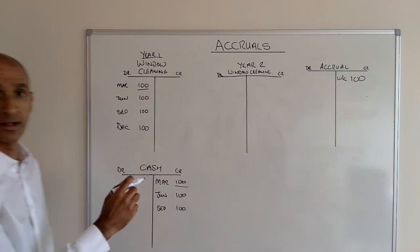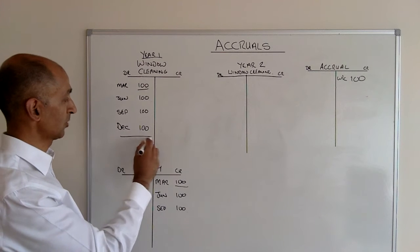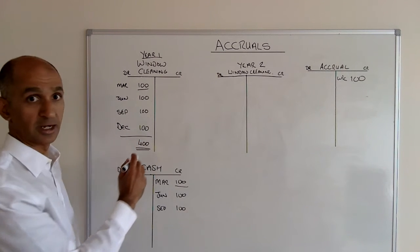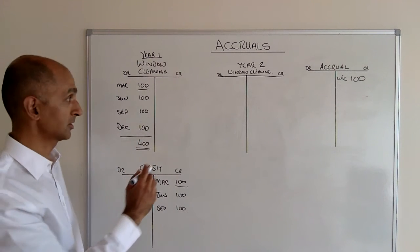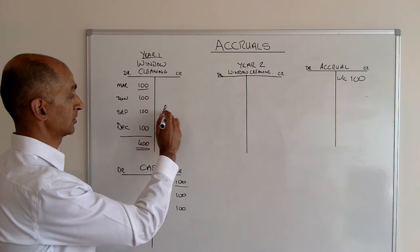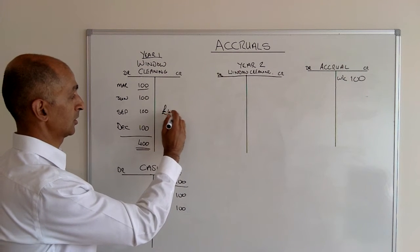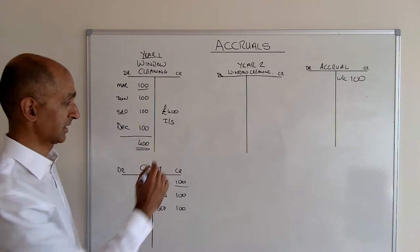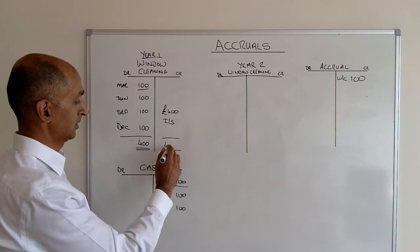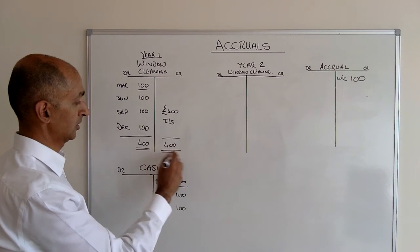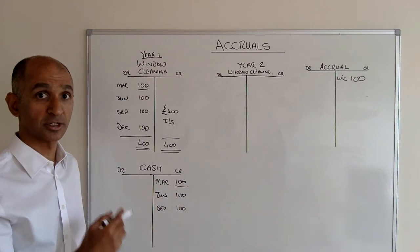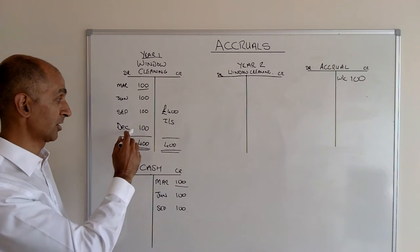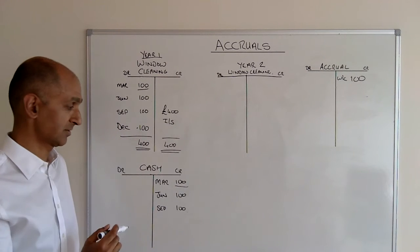Then we can close off the accounts in the normal way. The window cleaning expenses for the year were 400 pounds, and 400 pounds goes to the income statement as the window cleaning expenses — which is an accurate reflection of the costs incurred that year, irrespective of whether they were paid or not in the case of December.